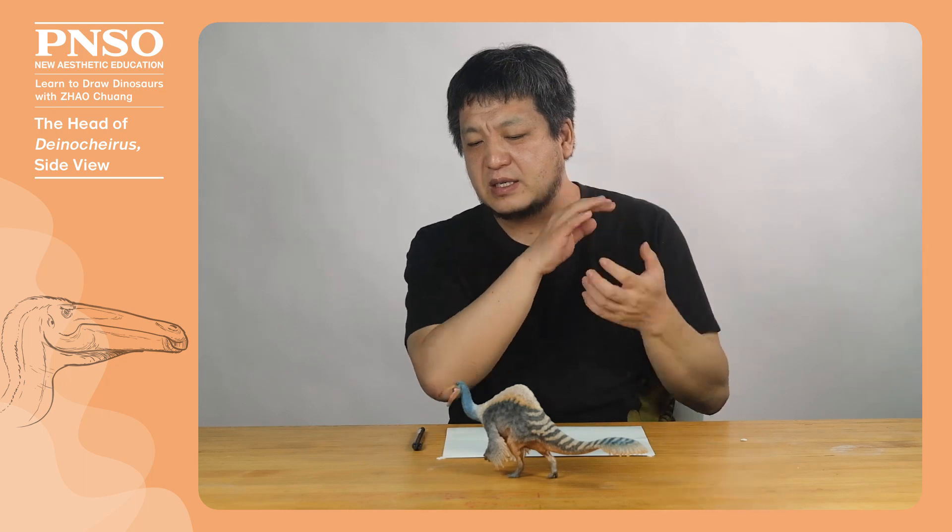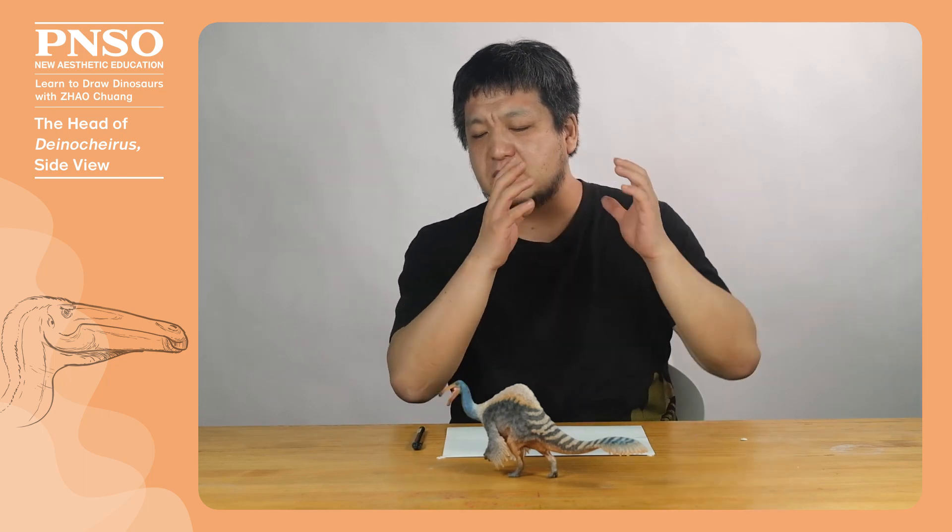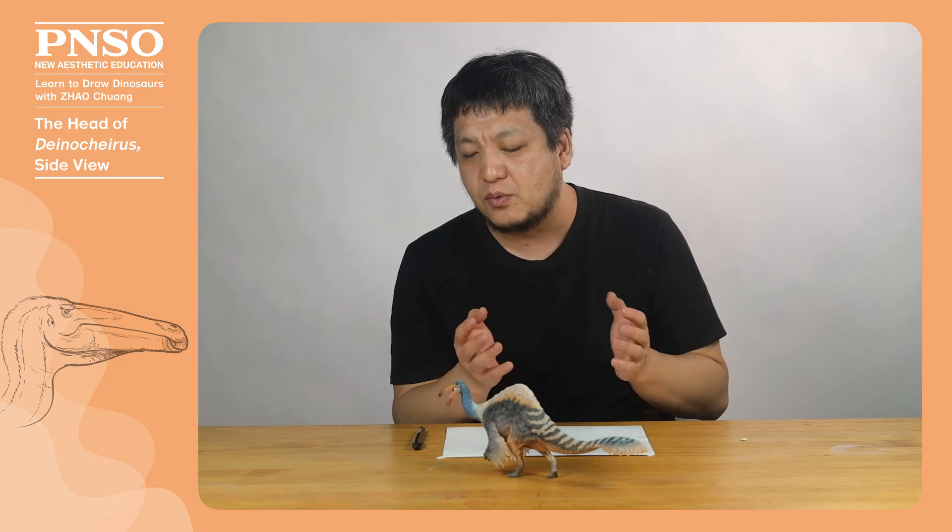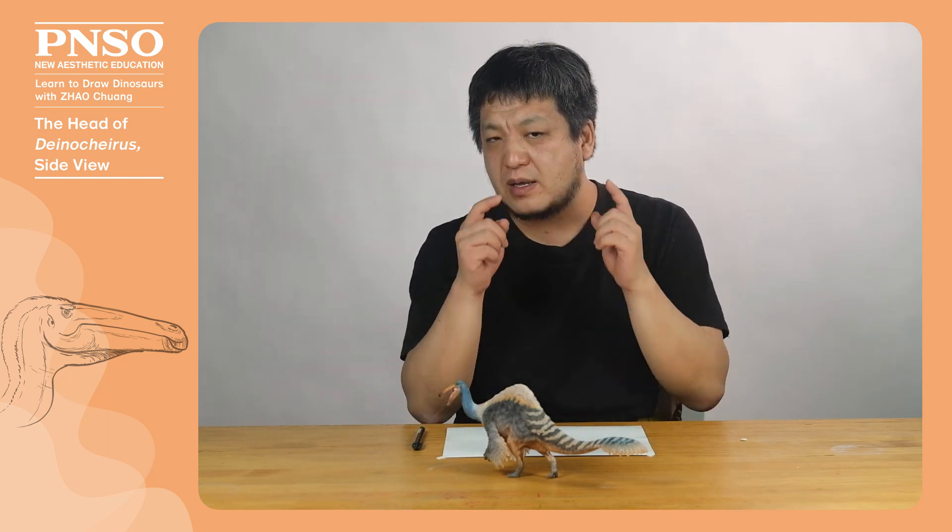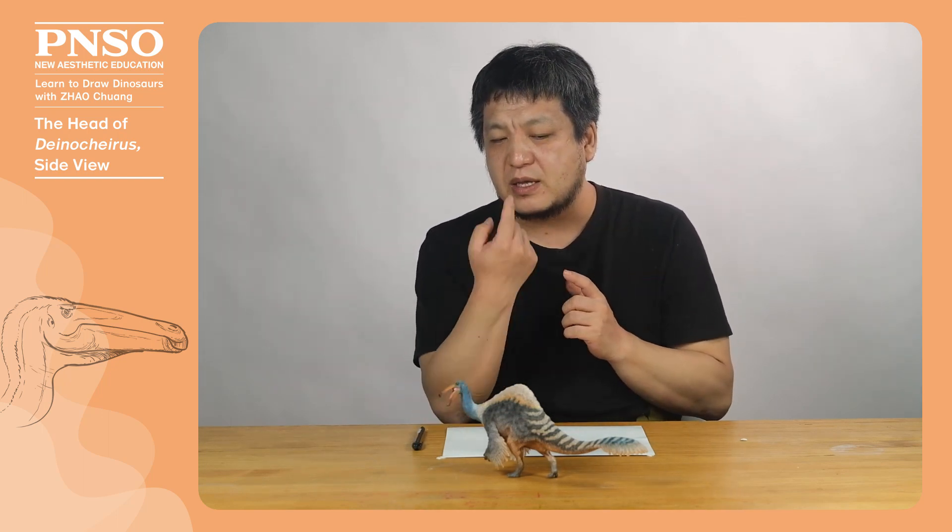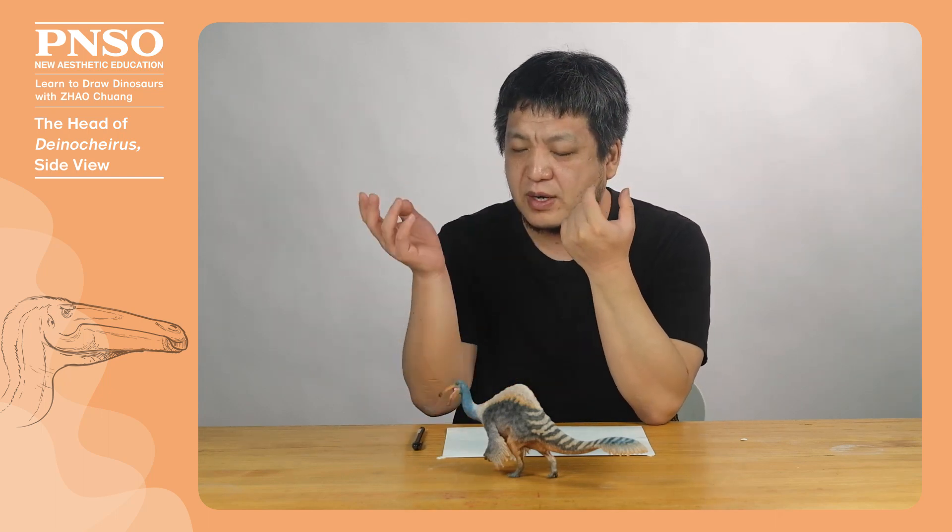Also, Deinocheirus had very small eyes. We know that the eyes of dinosaurs were surrounded by a bony structure called the sclerotic ring, similar to the shutter of a camera. Its sclerotic ring was only with a diameter of 8.5 centimeters.